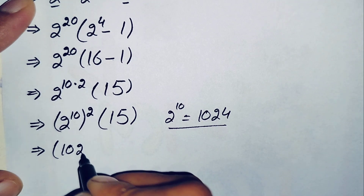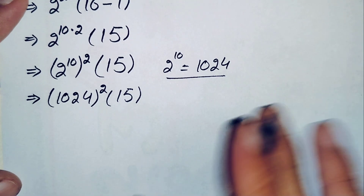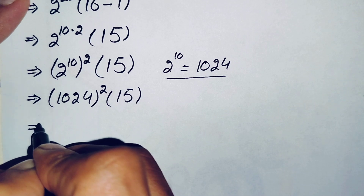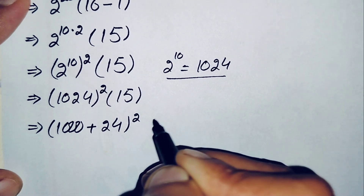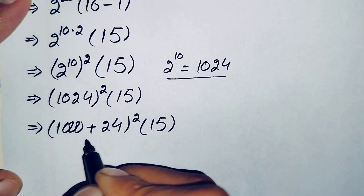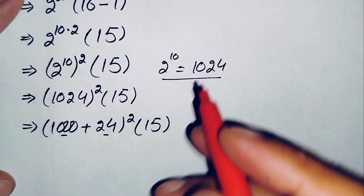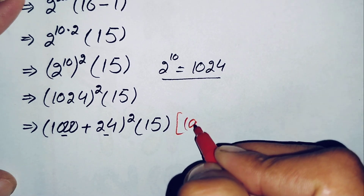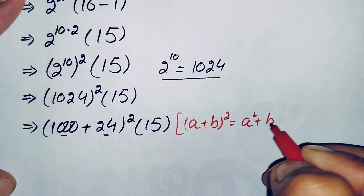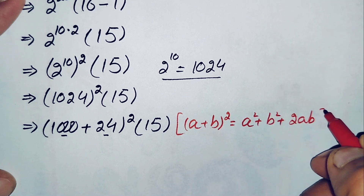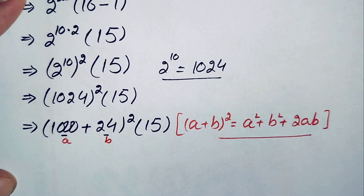We can write 1024 whole squared times 15, and here we will use the algebraic identity a plus b whole squared, which equals a squared plus b squared plus 2ab. Here a is 1000 and b is 24, since 1024 equals 1000 plus 24.